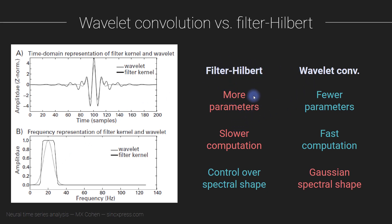The filter-Hilbert method involves more parameters, as I discussed in the video on the filter-Hilbert method. There is the kernel construction algorithm, there is the order — the number of taps, the number of time points in the kernel. There is the transition zone for how gently these slopes go down to zero gain. And then there is the bandwidth, which is the width of the plateau at the top.